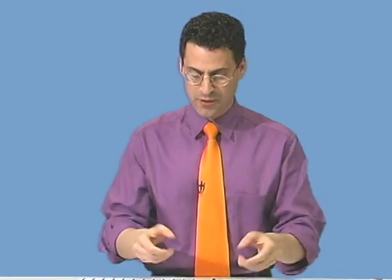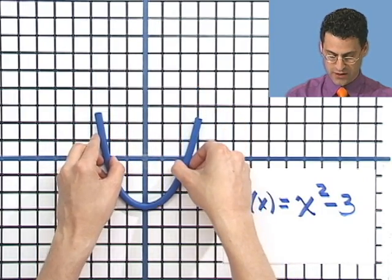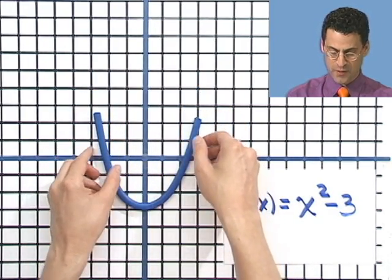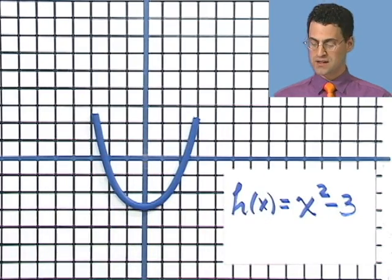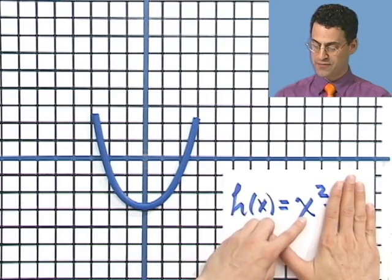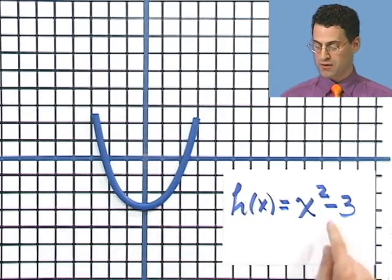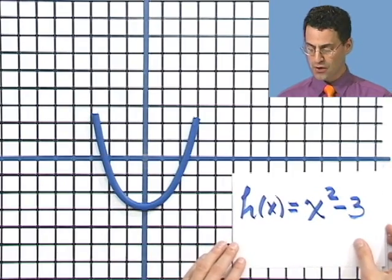So I just take my standard parabola and move it down 1, 2, 3 units. And so now the parabola looks like this. This is the graph of h, which is x² - 3. And notice that if you just know the graph of x², you can immediately find this graph by shifting down. The power of seeing the shift here.